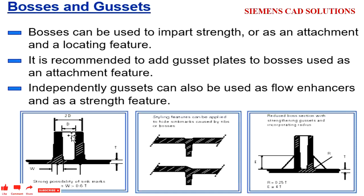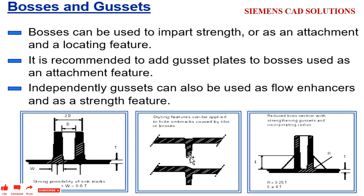Styling features can be applied to hide the sink marks caused by rib-bar bosses. While adding the boss, because of more material, it will have a sink issue. To avoid that, in the styling itself, we can have a feature on the boss area.